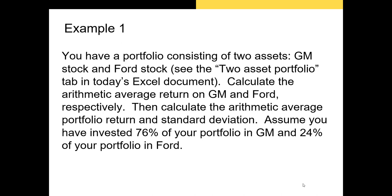Let's put that to the test with another example. We have a portfolio consisting of two assets — GM and Ford stock. We're going to calculate the arithmetic average return of both stocks, and then the portfolio return and standard deviation. For this example, we'll assume 76% of our portfolio is in GM and 24% is in Ford.